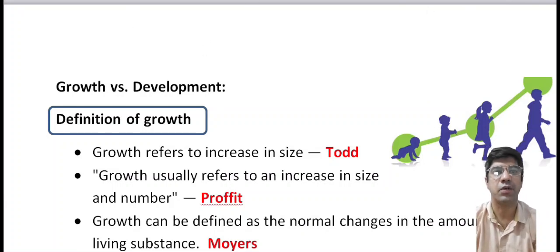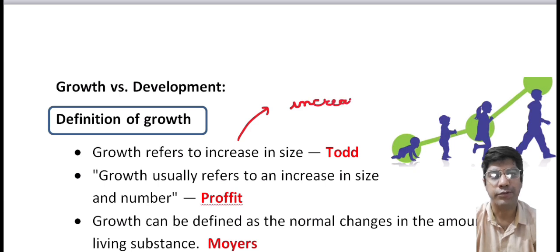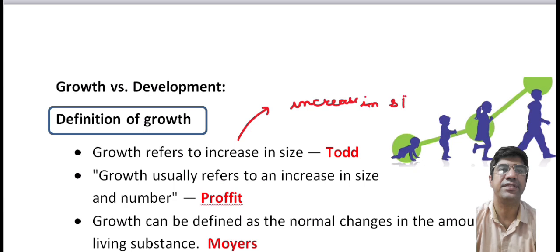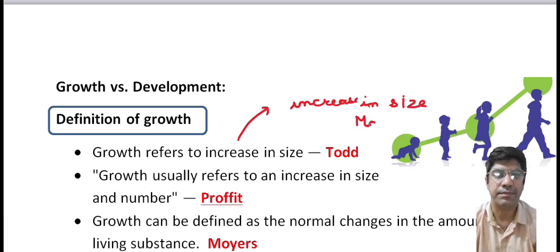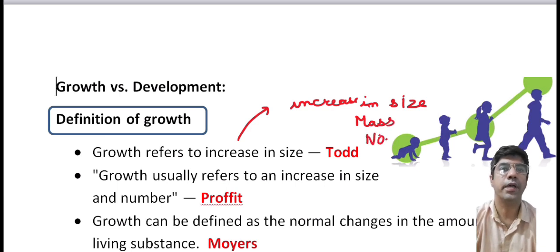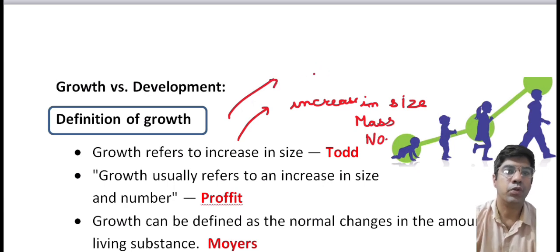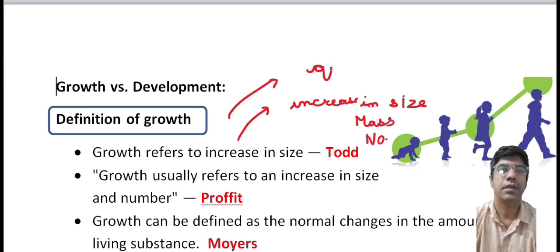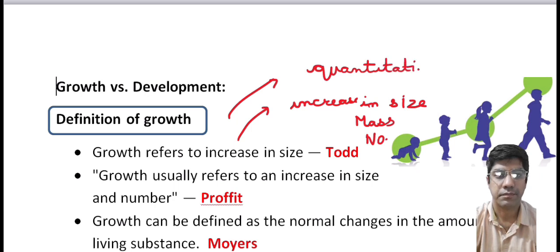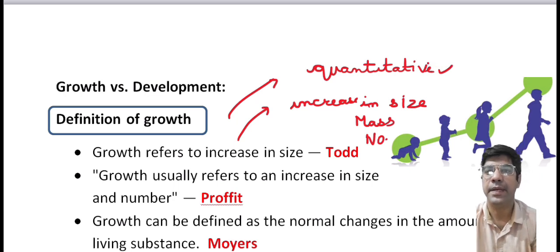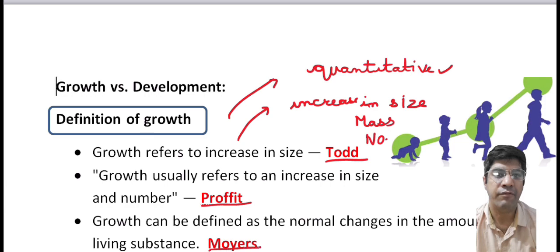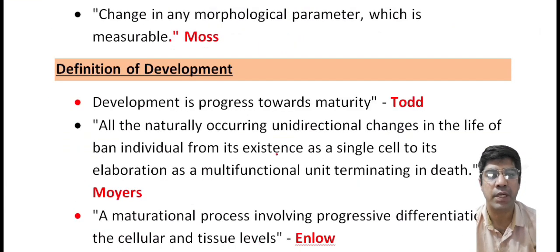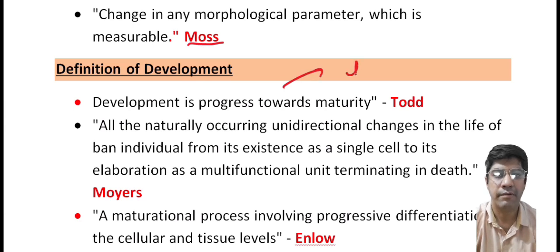Today's topic is growth and development. Growth primarily refers to increase in the size, mass, and physical dimensions of an organism. According to Todd, growth refers to increase in size; according to the textbook, it is increase in size and number. Growth can be measured and quantified — it involves tracking physical parameters like individual height, weight, and size of the body organs.